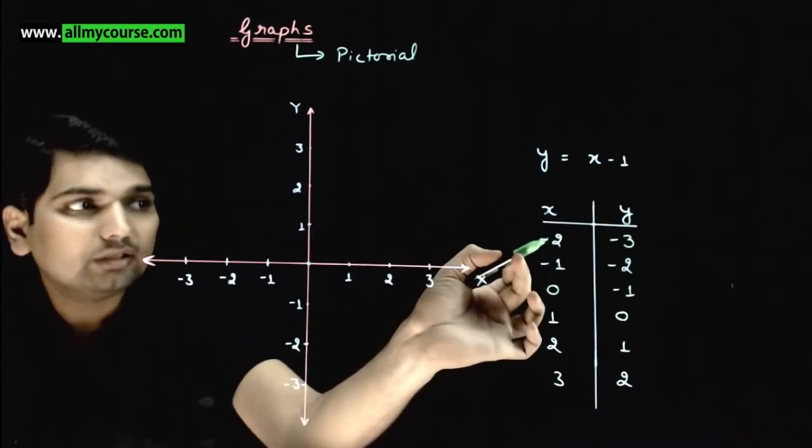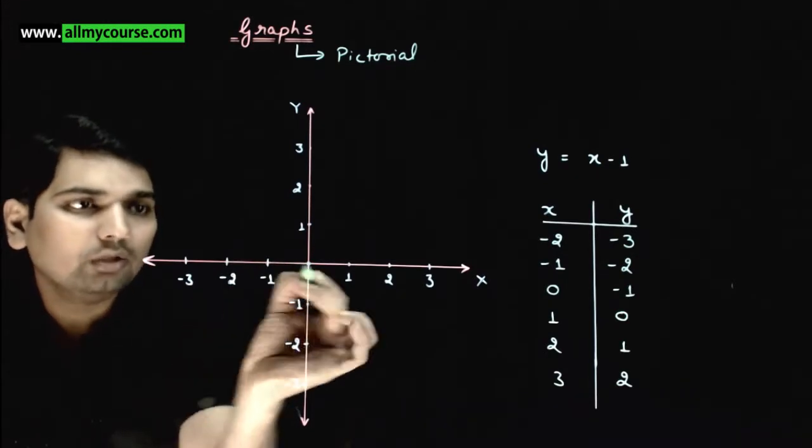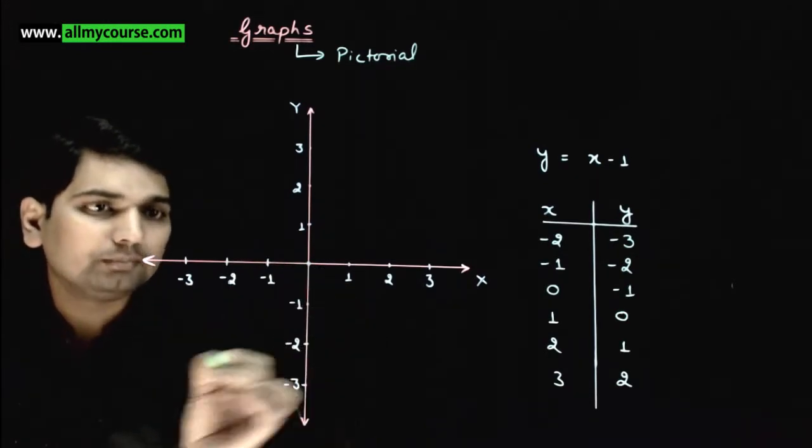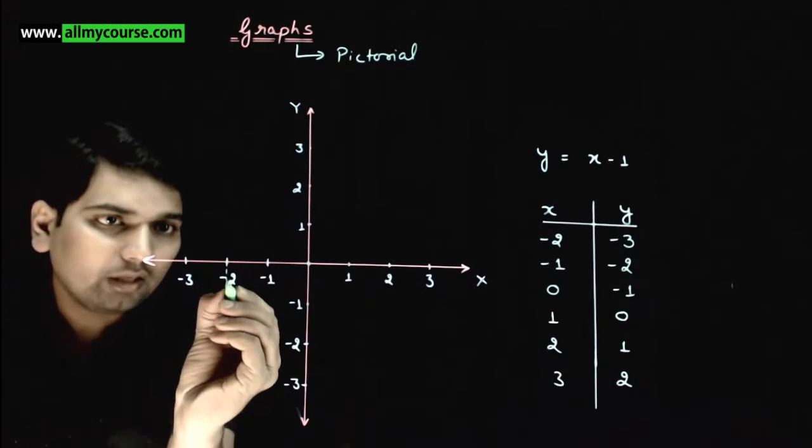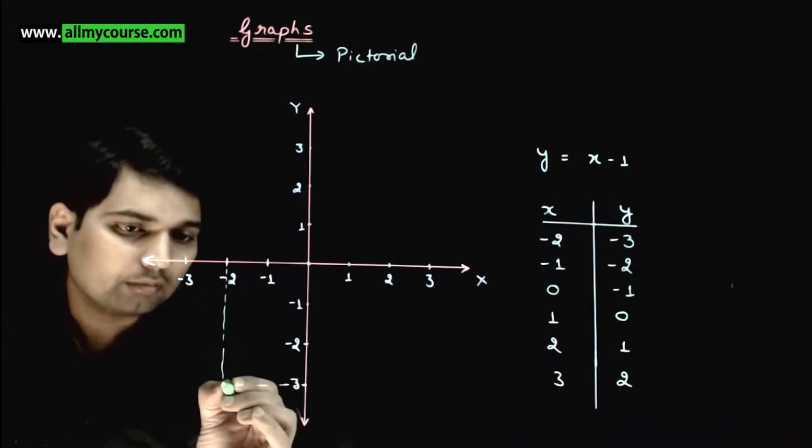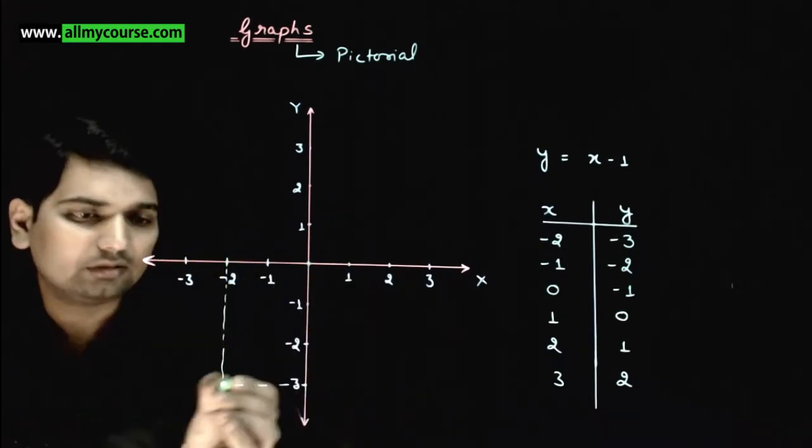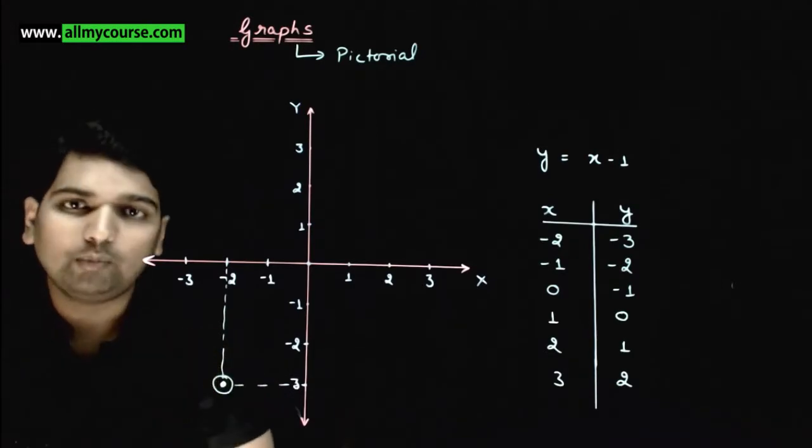X is equal to minus 2 and y is equal to minus 3. We've put x equals minus 2, so y value is minus 3. Meaning, where is your point? This point here.